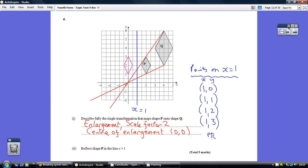Question 6. We've got to describe the single transformation mapping P onto Q. Well, it's an enlargement, one mark, scale factor 2, the second mark is twice as big, the lengths are twice as big. Take the length across the middle, it's gone from 2 to 4, to scale factor 2.